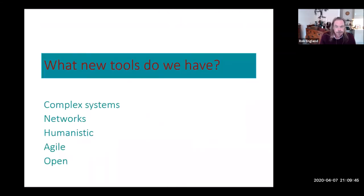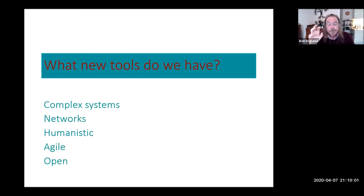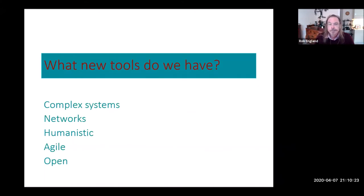Someone said to me, didn't Deming know all this stuff back in the 1930s–60s? And absolutely he did — he understood it intuitively, but he didn't have the language. Complex systems theory didn't exist until chaos theory in the 1990s. The language, the mathematics, the intellectual tools to think about complex systems have only existed for a few decades. This language didn't exist when I went to university. It's very much a new tool of thinking.